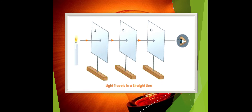Activity 1: How does light travel? Take three partitions of cardboard or wood and make a hole in each at the same position. Light a candle and stand on the other side — you will see the candle's light. If you move partition B upward so the holes are no longer aligned, you can't see the candle's light. This proves that light travels in a straight line.